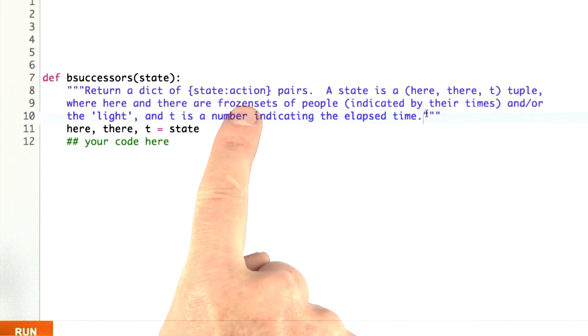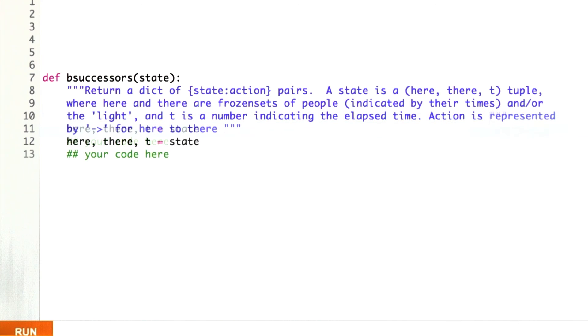One more thing I forgot is what are the actions? Let's say that an action will be represented by the character string arrow going to the right, if we're moving from here to there, and an arrow going to the left if we're moving from there to here.